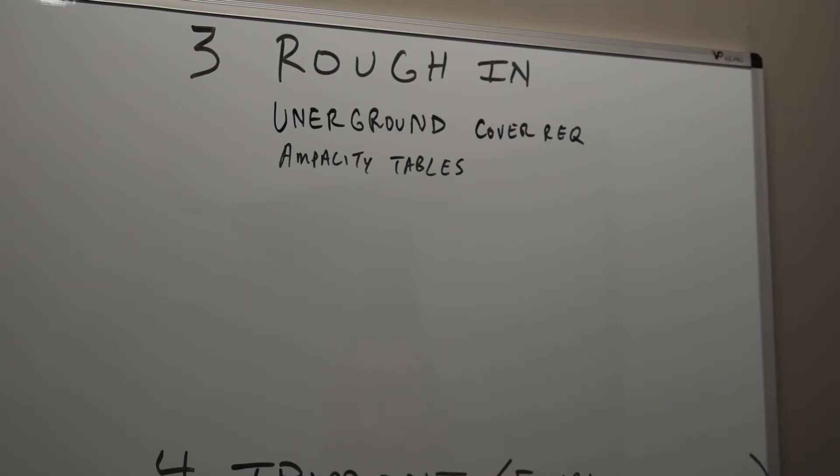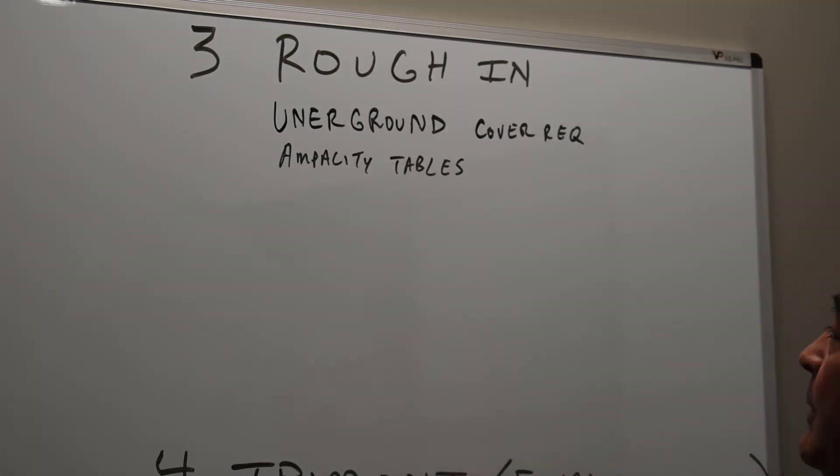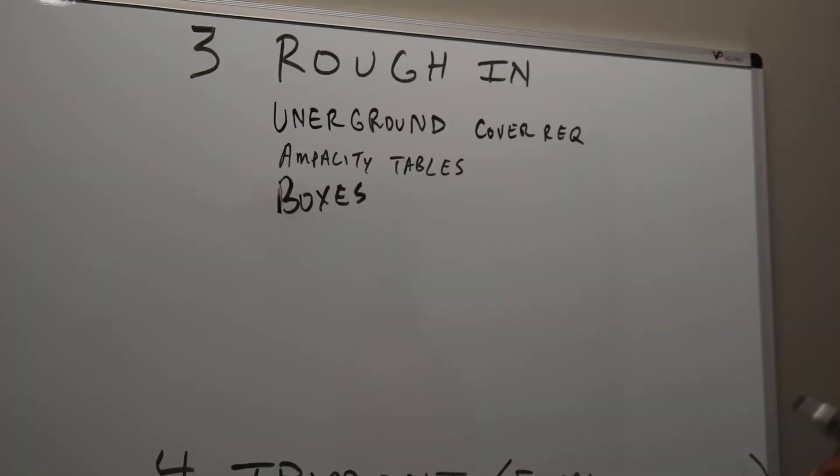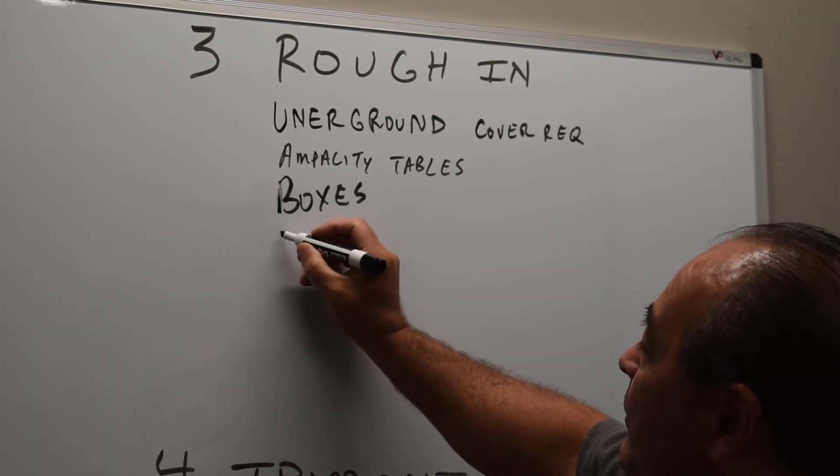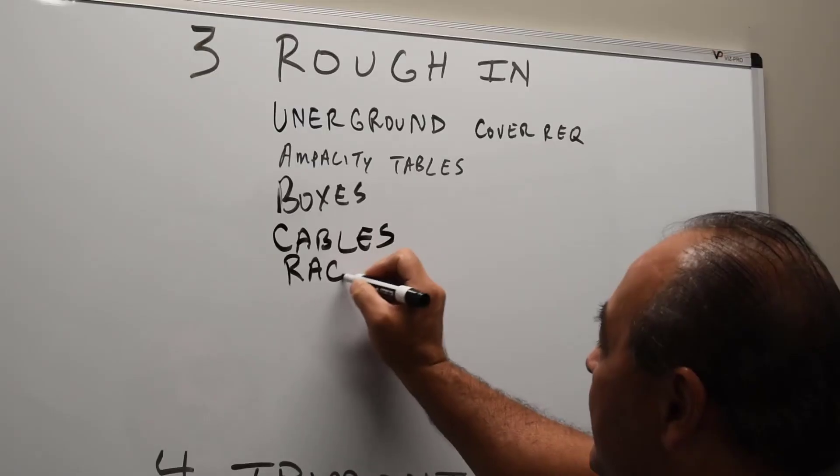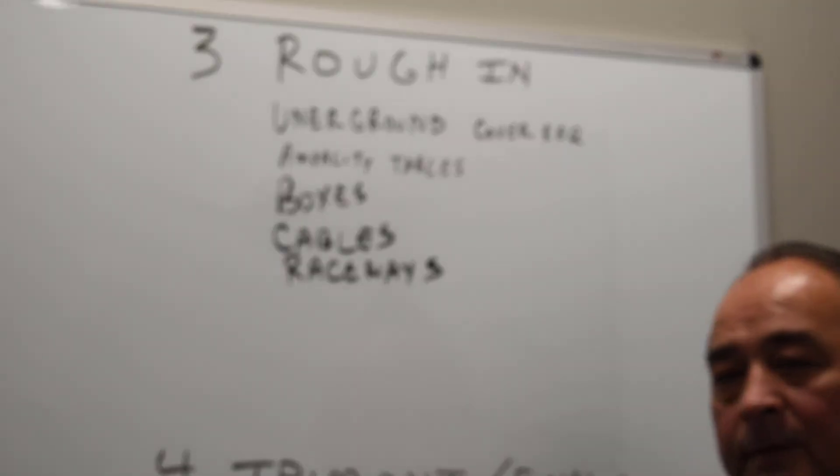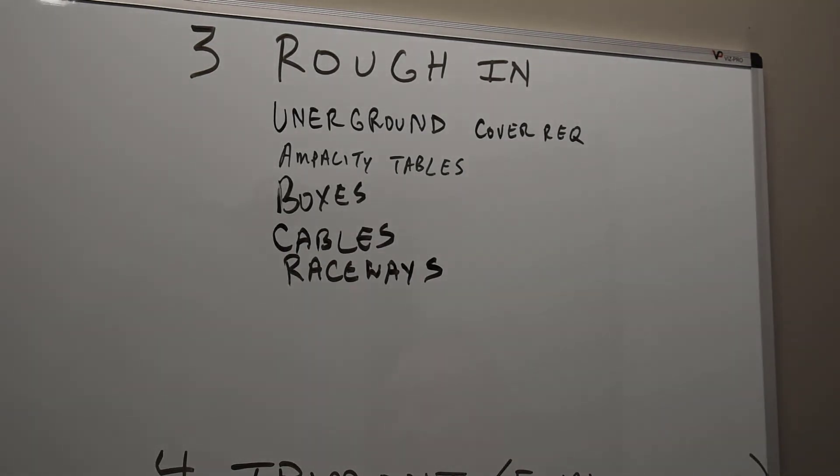After the ampacity tables, we get into boxes, sizing those correctly based on what their use is, whether it's for a device or a splice or an angle or a pull. That's in Chapter 3. Size those boxes correctly and mounting those boxes correctly. After that, we get into all the different raceways or cables. When I say raceways, I'm talking about your typical conduits. I'm also talking about cable trays, wire troughs, all the different raceways and all the different cables.